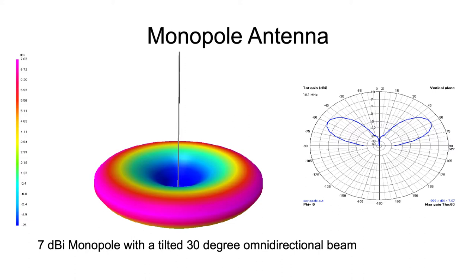The monopole is an omnidirectional antenna. Seen from the top it would be a circle, and here in this 3D view we often say it's a donut shape — you'll recognize the donut structure. Seen from the side there are distinct directions in which it sends its power; seen from the top it's a circle.